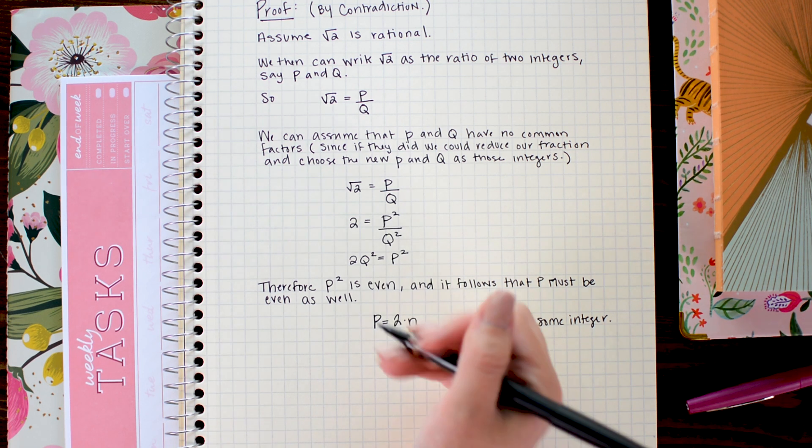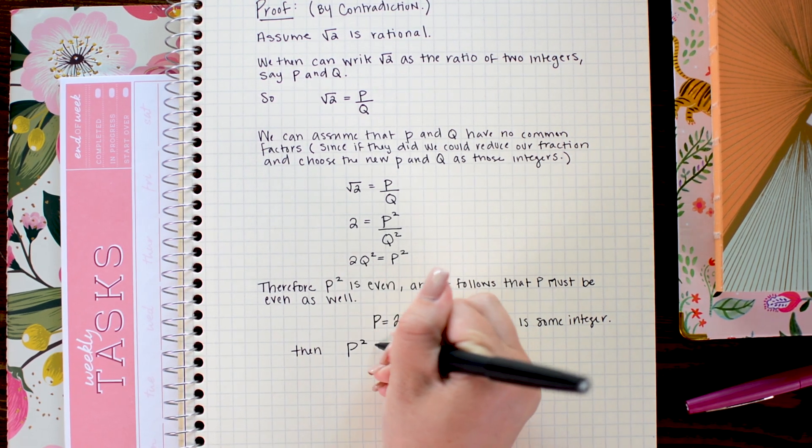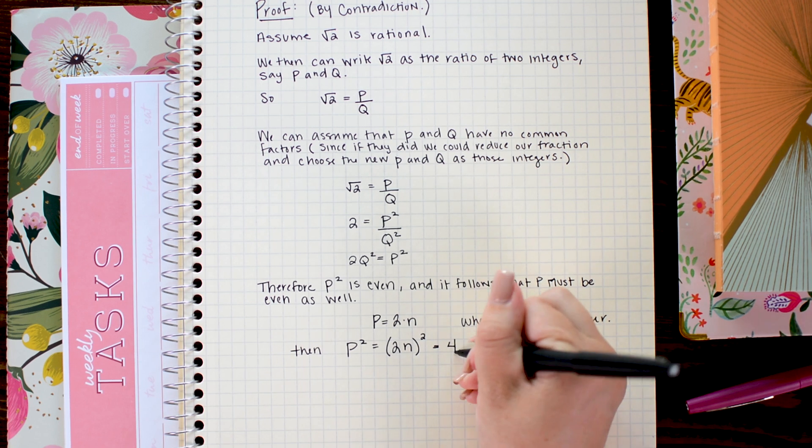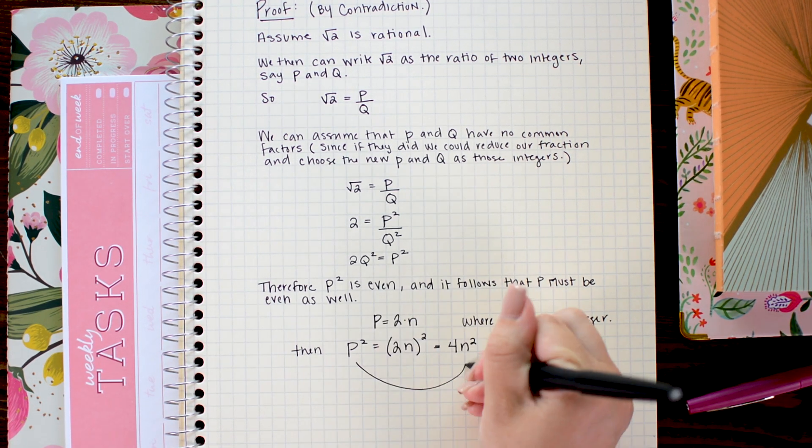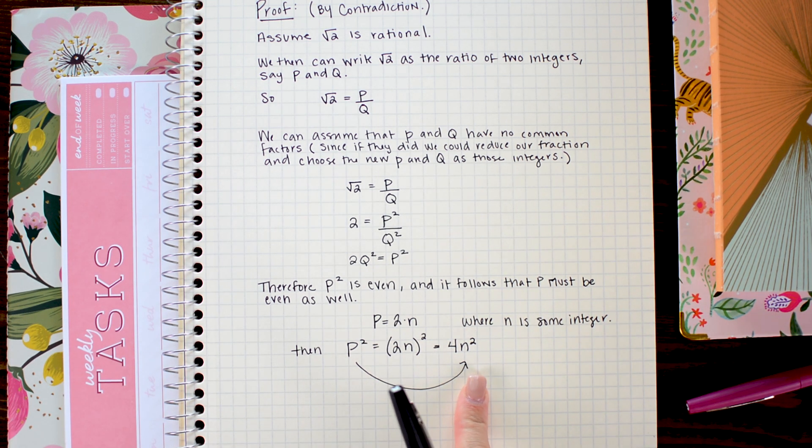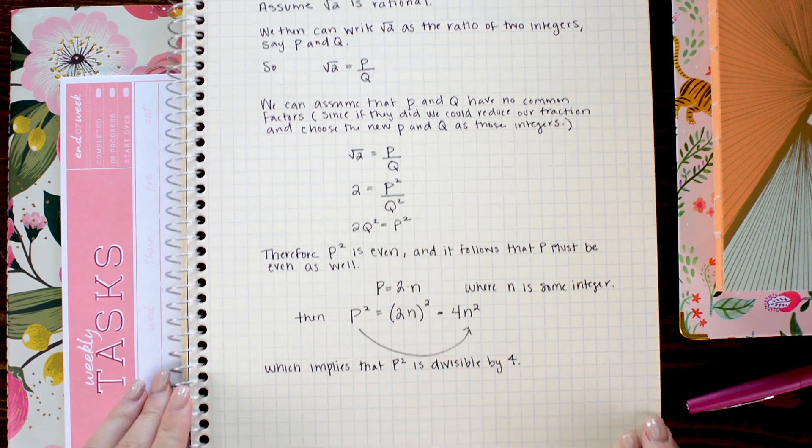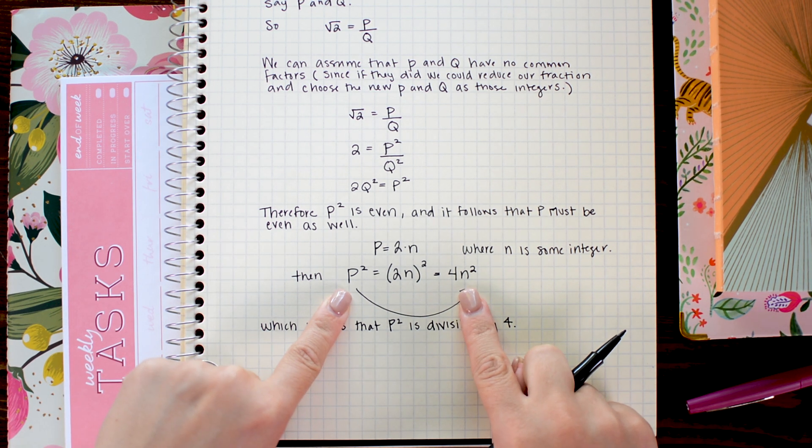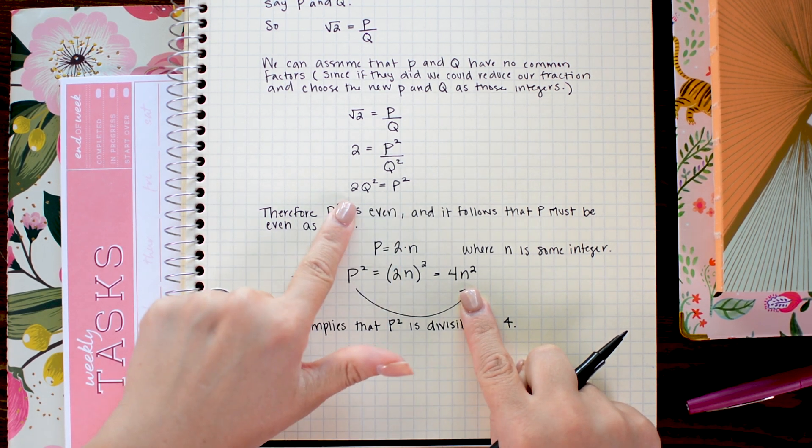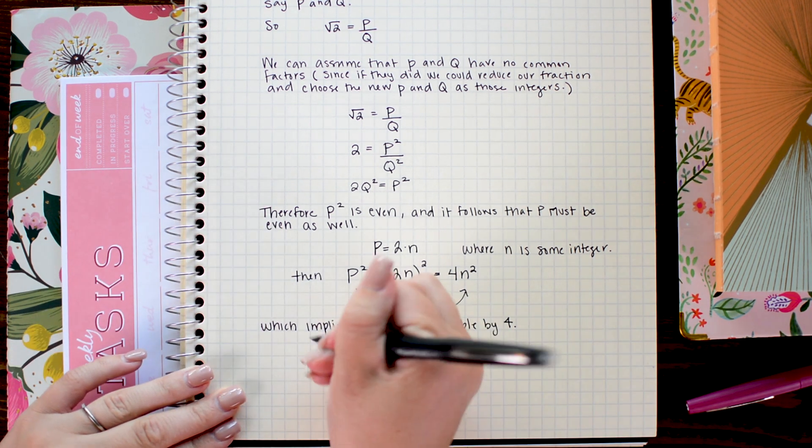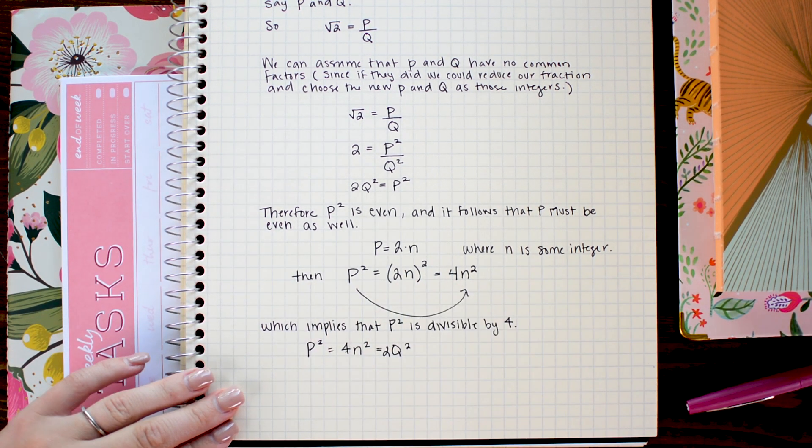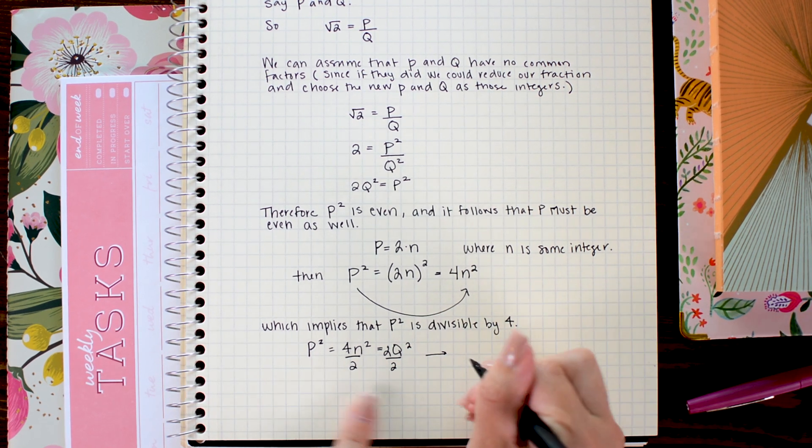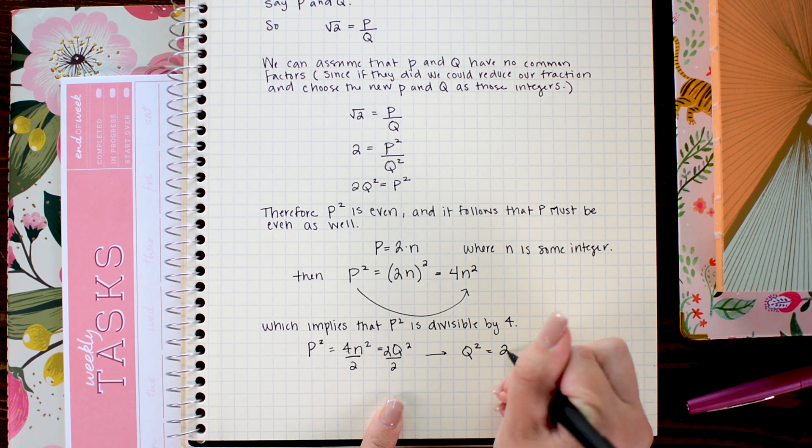So if p equals 2n, then p squared equals 2n squared, which is equal to 4n squared. That implies that p squared is divisible by 4. So our final step here is just to put all this information together. So we have that p squared equals 4n squared, and we also know that p squared equals 2q squared. So I'm going to put those all as one line. Now I'm going to divide both of these by 2, and we find that q squared equals 2n squared.